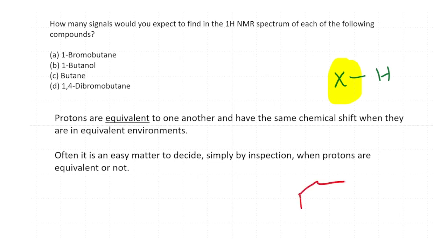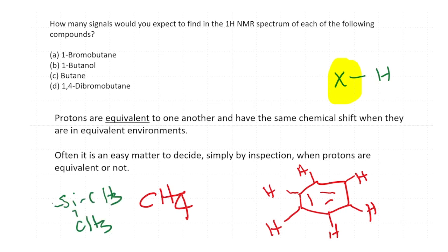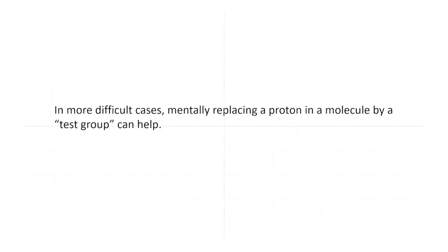For example, in benzene all the hydrogens have the same chemical shift because they are in equivalent environments. Methane is another example where all hydrogens are clearly equivalent. Tetramethylsilane (TMS) — with four CH₃ groups — has all 12 hydrogens equivalent because they are in exactly the same environment. In some cases it may not be so straightforward.